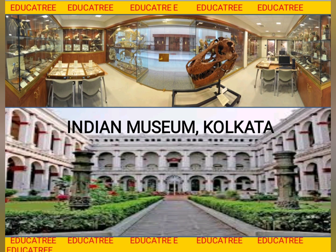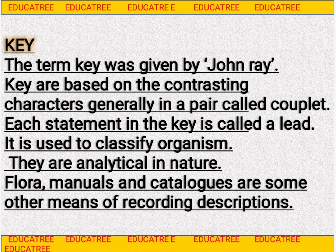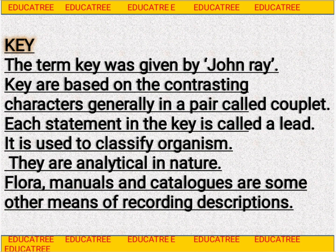This is the largest museum in India. The last taxonomical aid is key. A direct exam question is: who gave the term 'key'? The term key was given by John Ray. Using a key, we identify plant or animal on the basis of similarities and dissimilarities. Key is always based on contrasting characters — meaning two opposite characters — which is why each pair is called a couplet. Each individual statement in a key is called a lead. Key is analytical in nature.